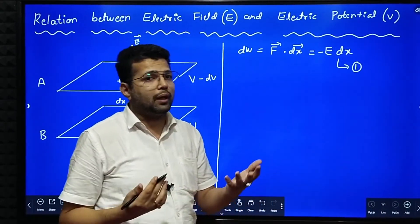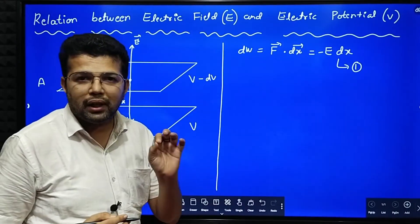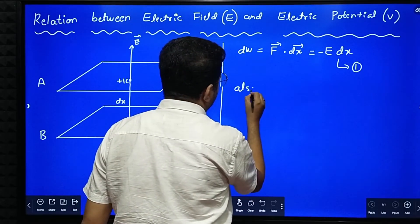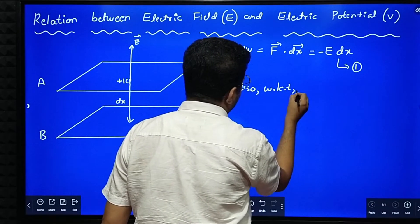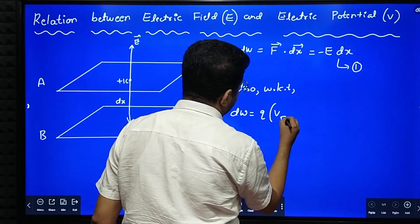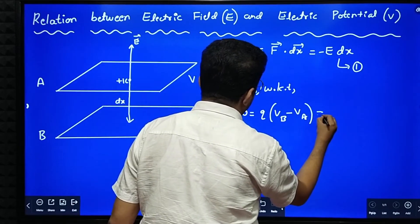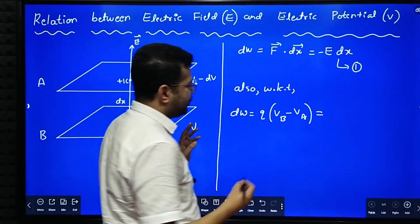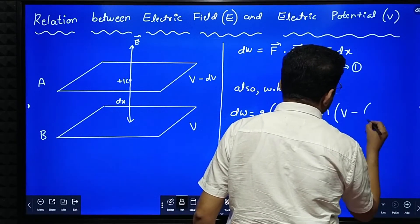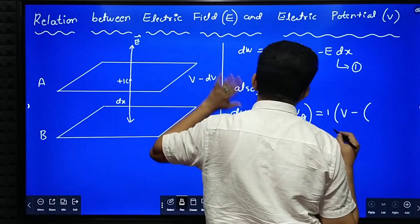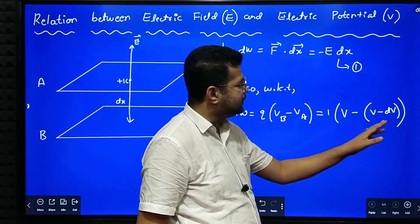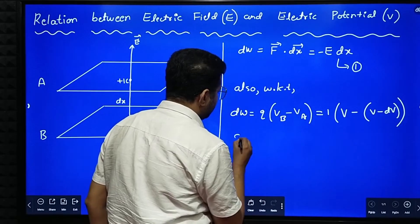And how to calculate? There is one more method to calculate work done. What is that? Work done equal to charge into potential difference. Also, we know that work done equal to charge into potential difference VB minus VA. So that is equal to, what is the charge that we are bringing? We are bringing unit positive charge. 1 into VB. Potential of equipotential surface B is V minus VA. What is the potential of this surface VA? V minus dV. So here what happens? V minus V gets cancelled. Minus minus becomes plus dV. DW is equal to dV.